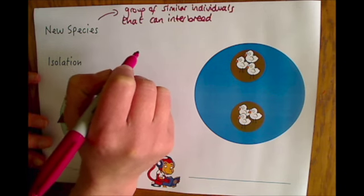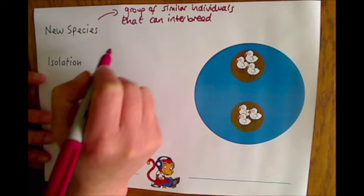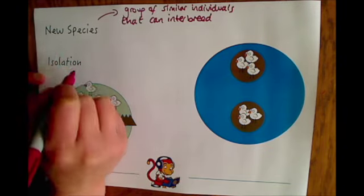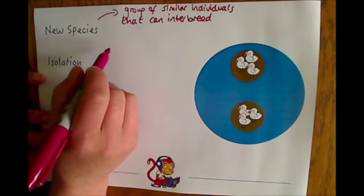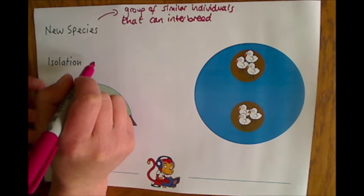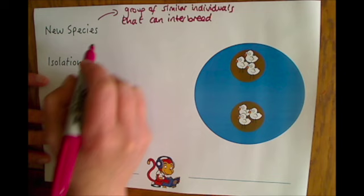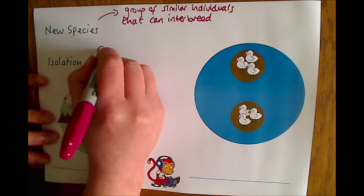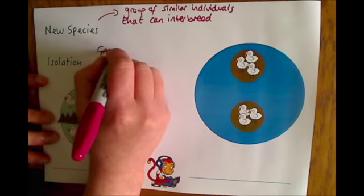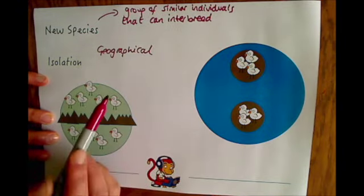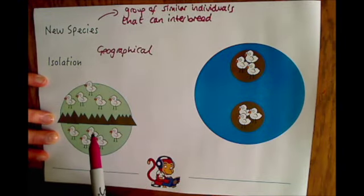The way that new species are brought about is by isolation — meaning that they are physically separated from each other. We tend to call that geographical isolation, when the animals can't actually reach each other to be able to breed.